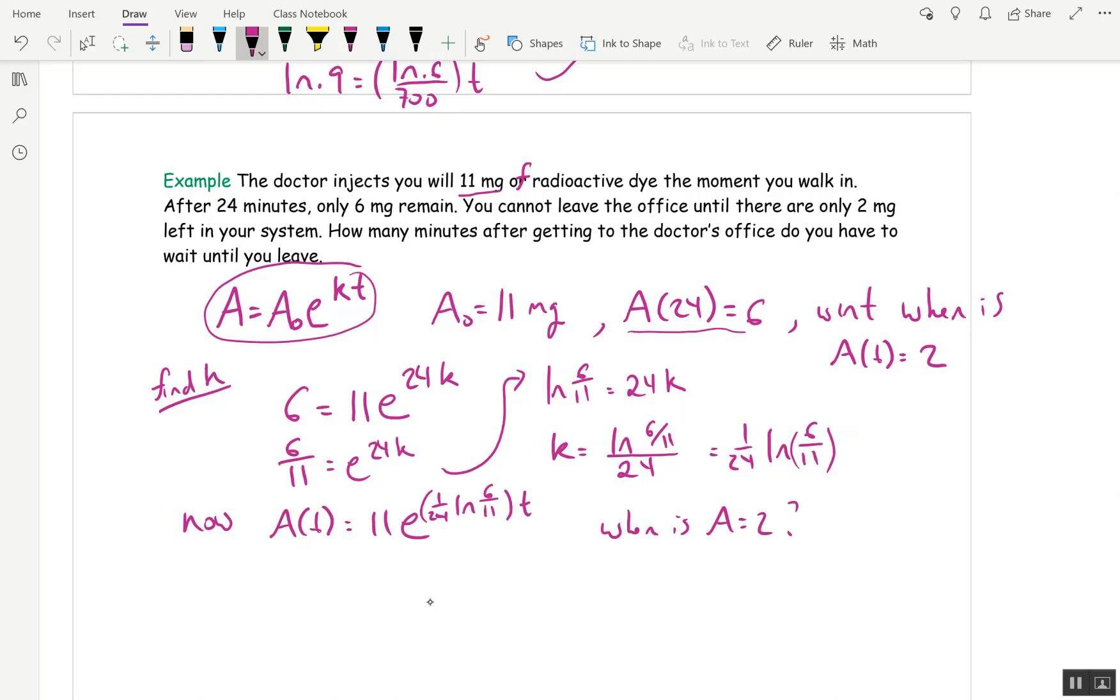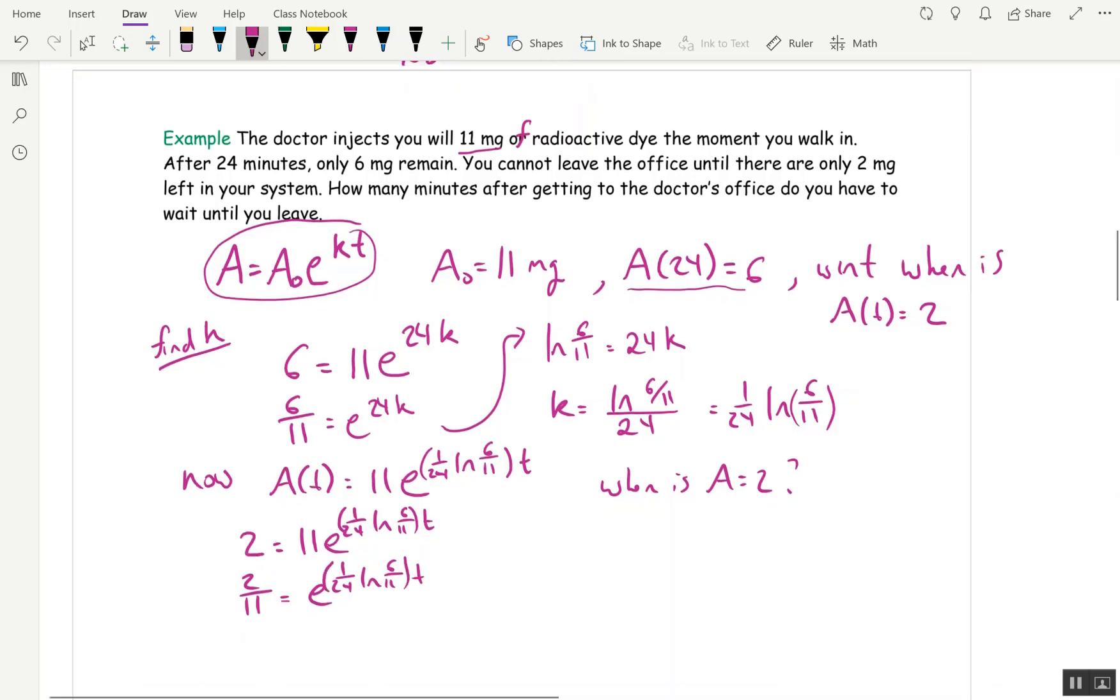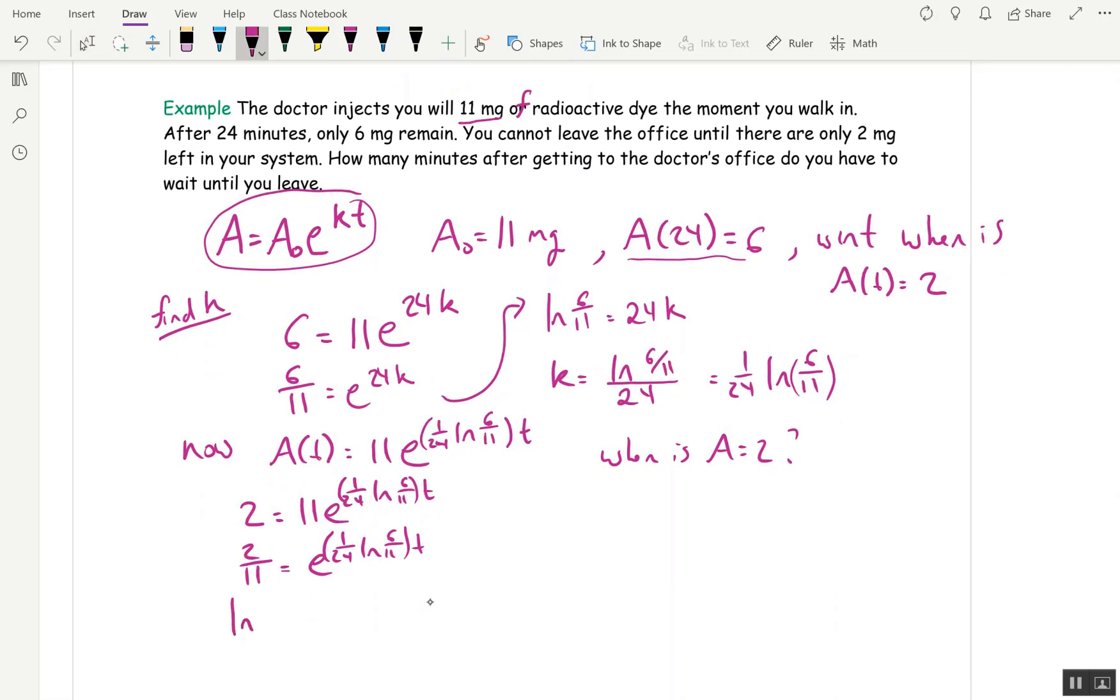We want to know when is A(t) 2. So we set 2 equal to A, and here we have 11e to the 1 over 24 ln of 6 over 11t. Divide both sides by 11. 2 over 11 is e to the 1 over 24 ln of 6 over 11t. Okay. Now take natural log of both sides.